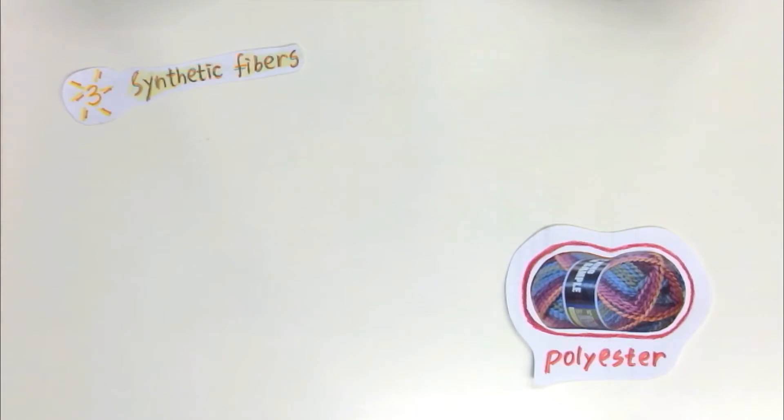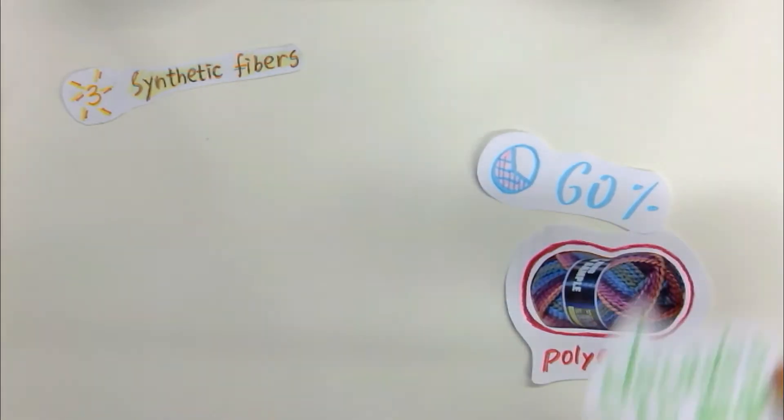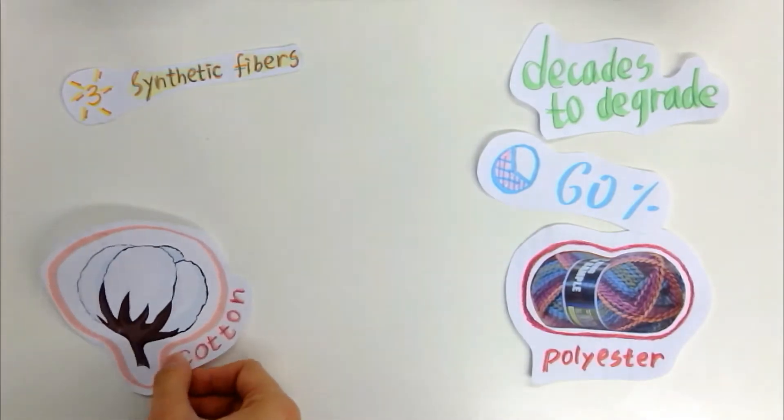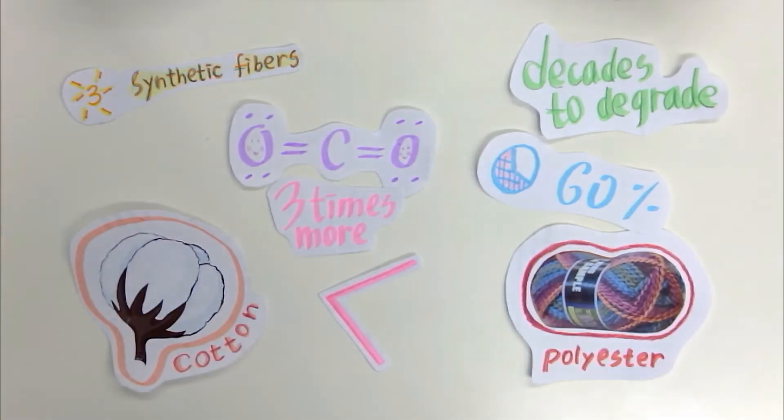The most widely used manufactured fiber is polyester, which is made from petroleum. Polyester already represents 60% of today's clothing, takes decades to degrade, and also emits nearly three times as much carbon dioxide in its life cycle than cotton.